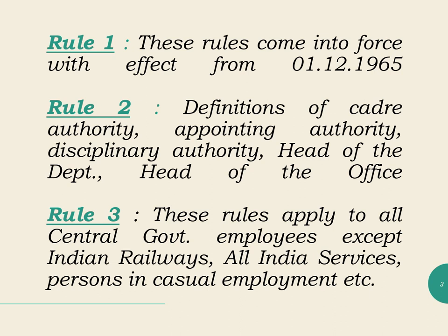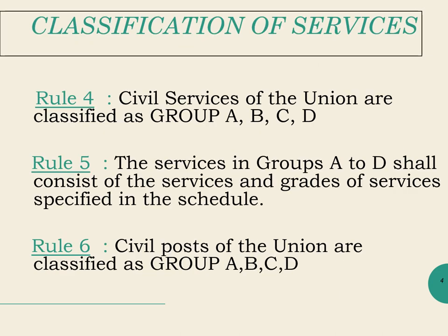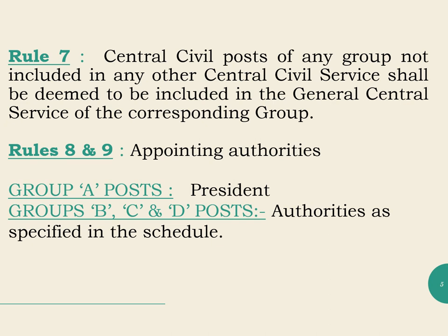With regard to the CCS-CCA Rules 1965, Rules 1, 2 and 3 are only the preliminaries which mention the date of enforcement of these rules and provide for definitions of some important terms and applicability. Rules 4, 5, 6 and 7 are about the classification of services under the Government of India with regard to various posts. Rules 8 and 9 are about the appointing authorities for various posts. There is not much to explain from Rule 1 to Rule 9, so let us go straight to Rule 10.